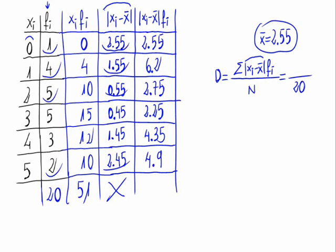We add all of the results, the whole column and it is 23. So, the numerator is 23 divided by 20 is 1.15.